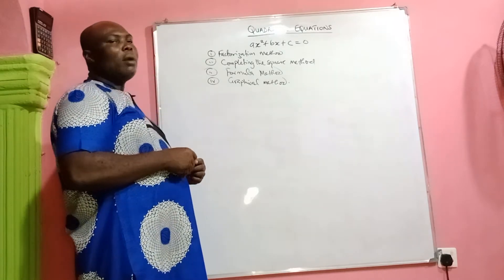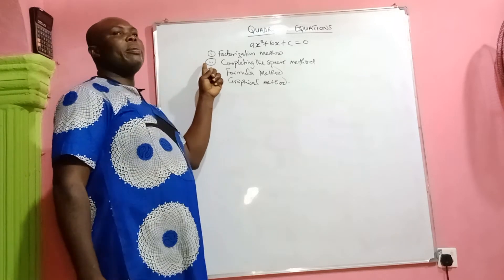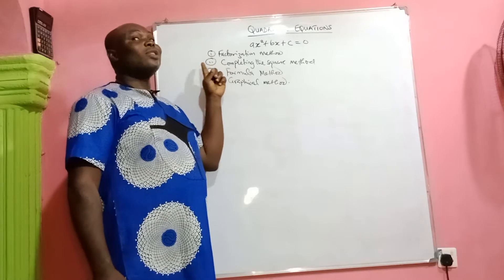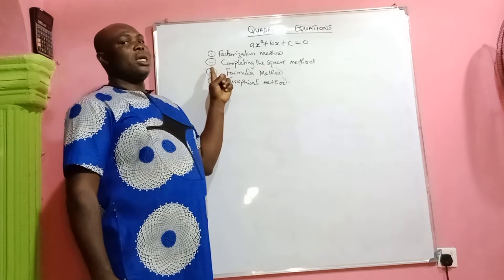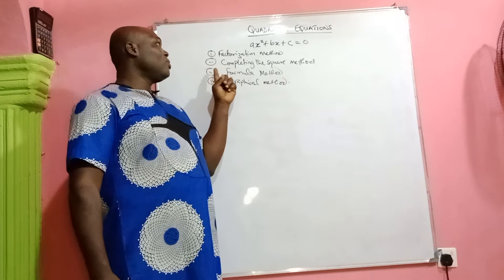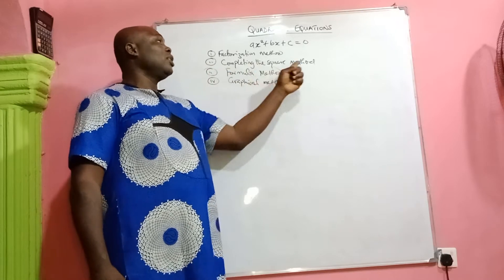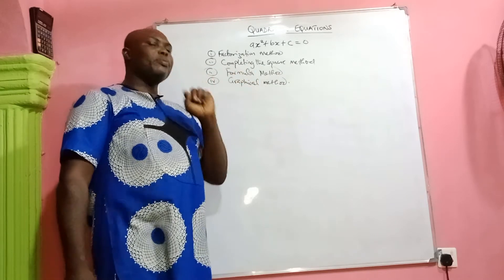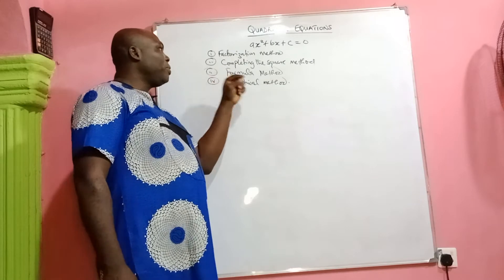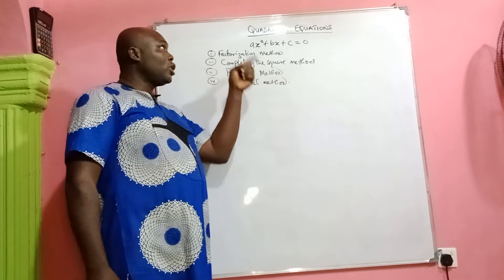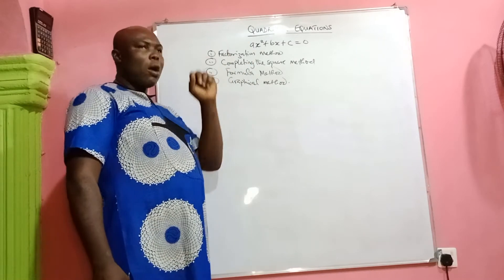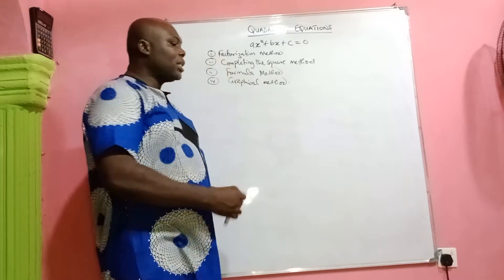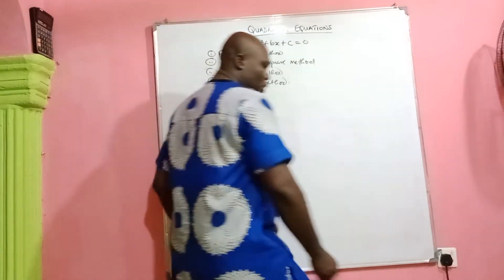The most complex among these methods is the completing the square method. But by the time I train you on it, you'll see how simple it can be. In the next part of this series — completing the square method, which is part 2 of quadratic equations — I will show you how to handle that perfectly well. So today we'll be taking the factorization method.